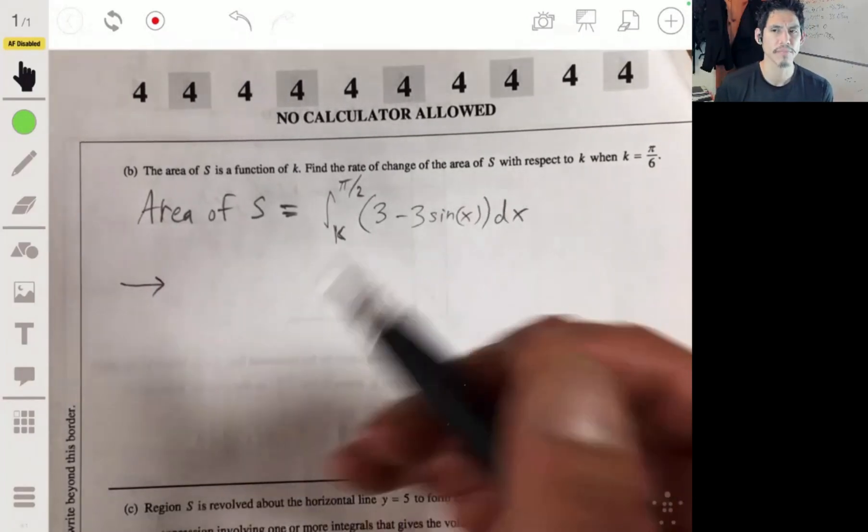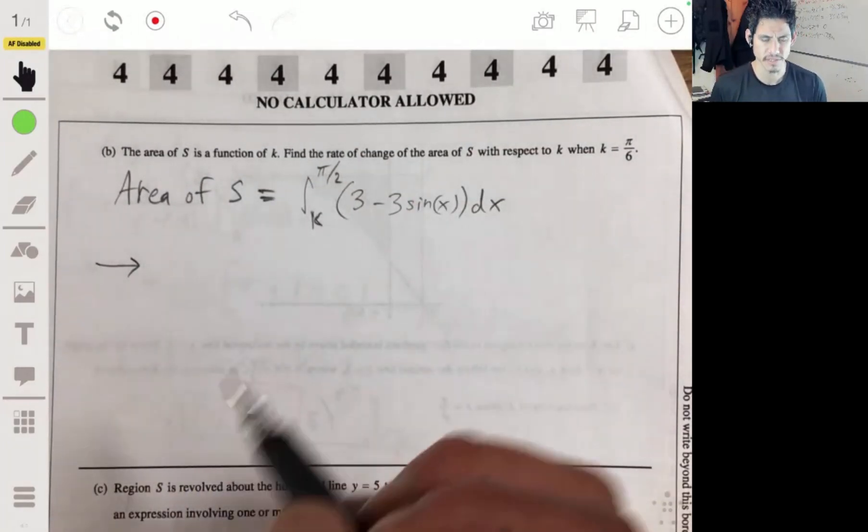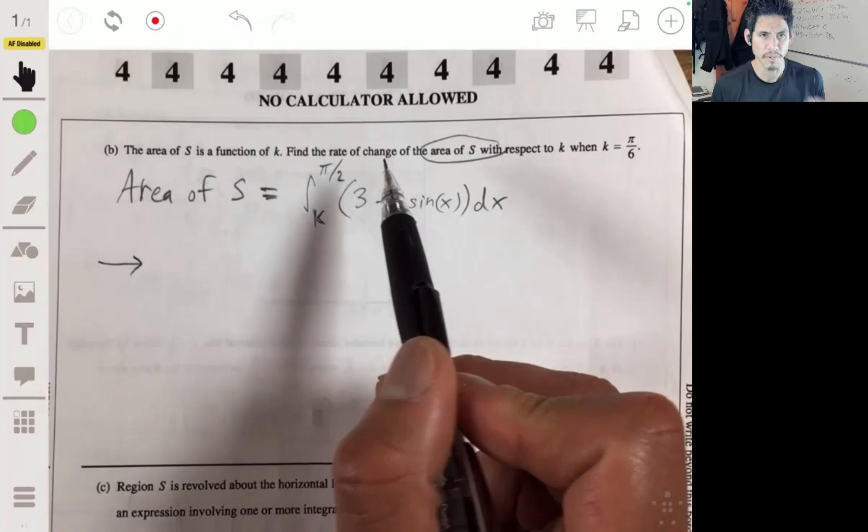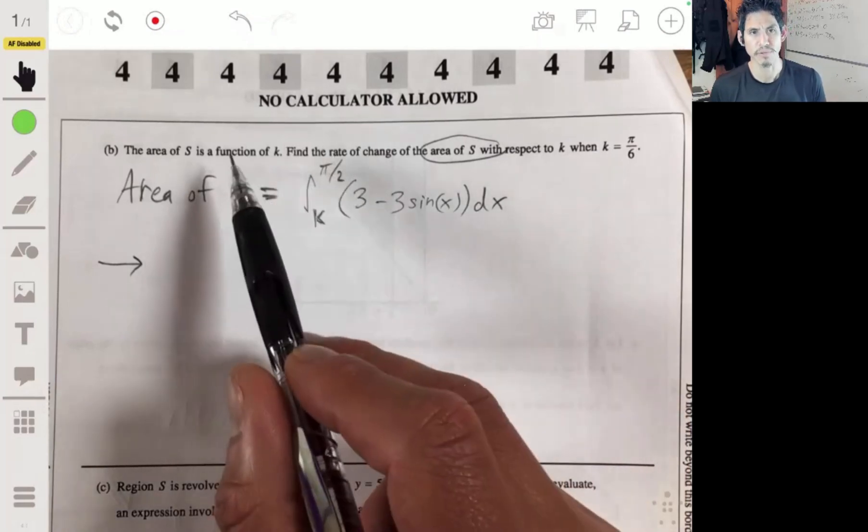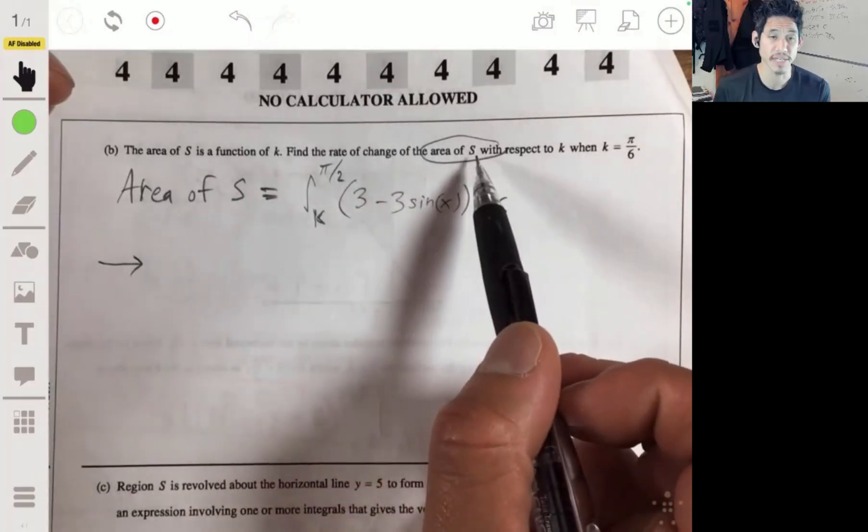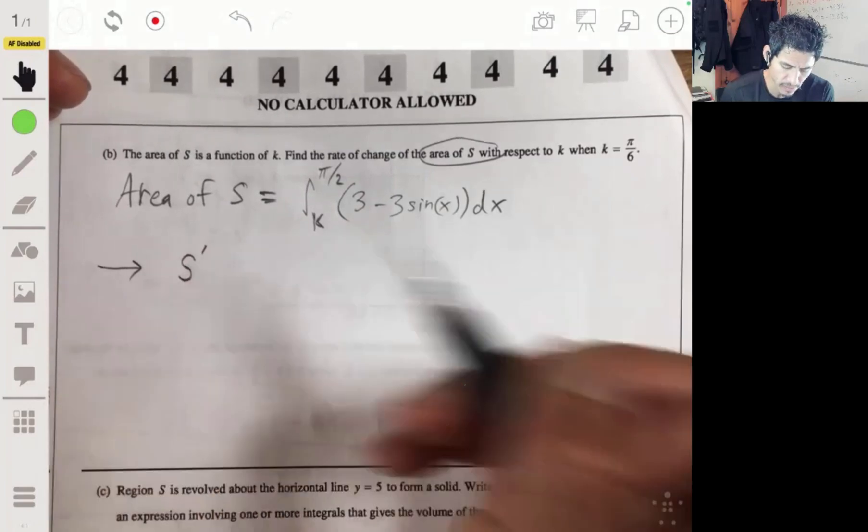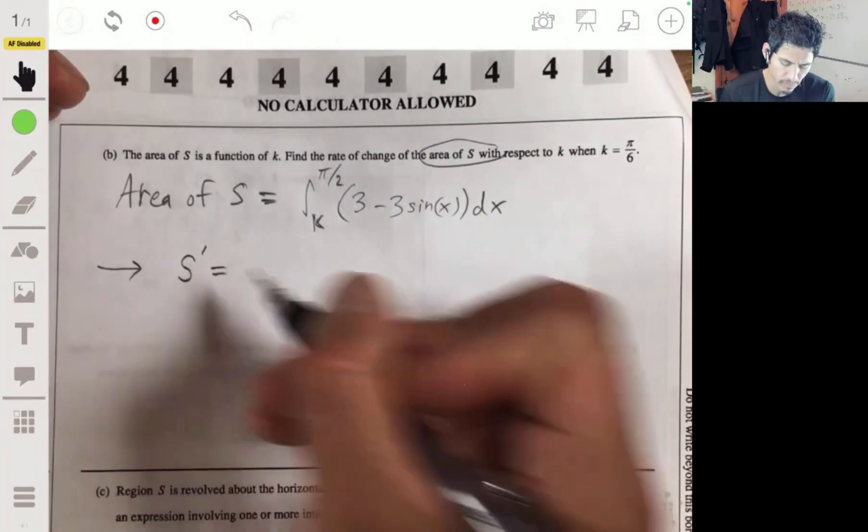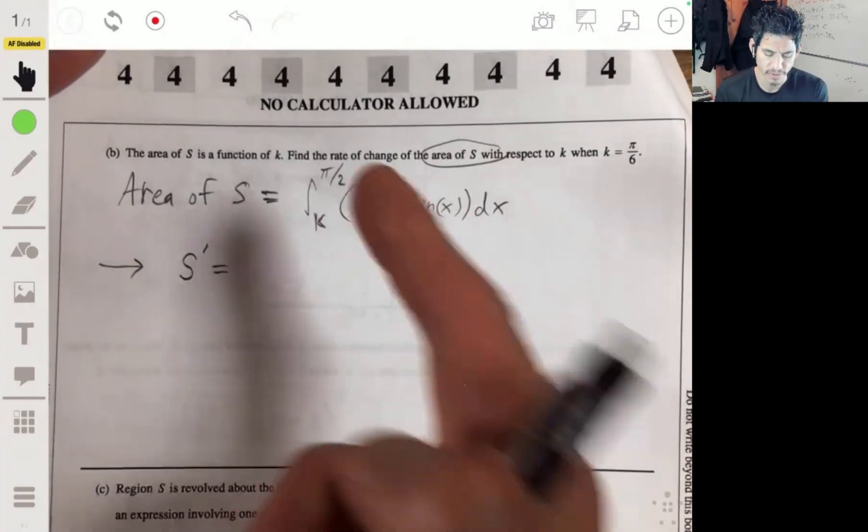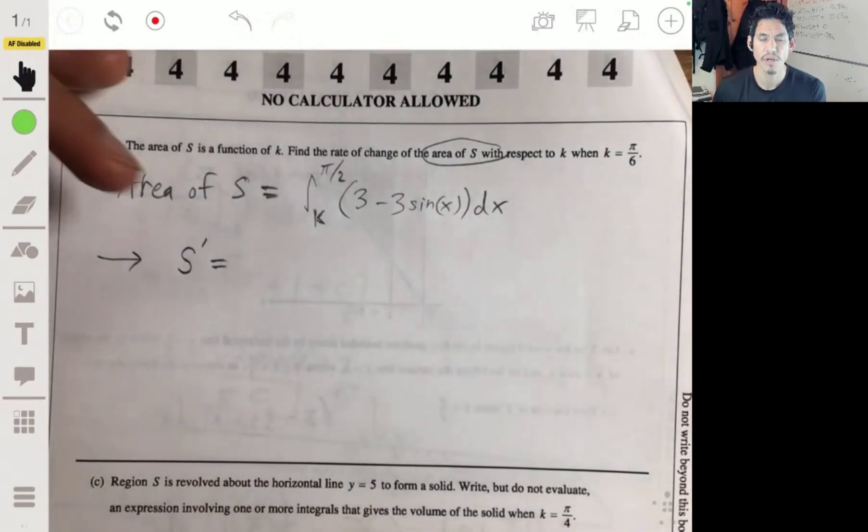Oh, so just solve this. Now, this is where students usually get stuck. And it's actually a weird question, but it's a good question. So, I almost kind of fell off track too, because remember, we're trying to find, we're told that S is a function of k, the area of S is a function of k, but we need to find the rate of change of the area of S. So, we need to find S prime.